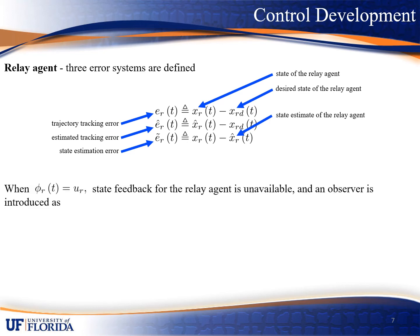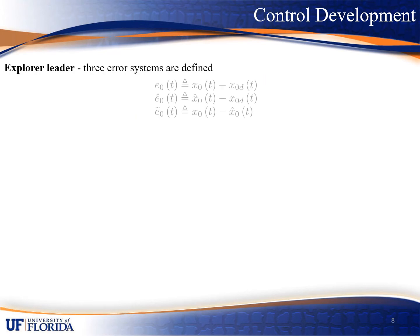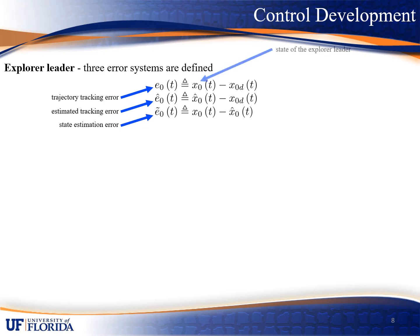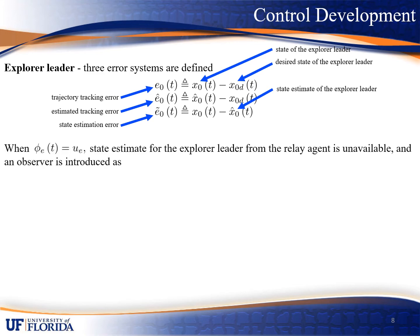When feedback is unavailable, we use an observer to approximate X_R dot. For the explorer leader, we also define three error systems: E_0, E_0 hat, and E_0 tilde, where X_0, X_{0d}, and X_0 hat denote the true state, the desired state, and the state estimate of the explorer leader. Note that E_0 equals E_0 hat plus E_0 tilde, and this relationship will be used in the stability analysis. When feedback is unavailable, we have to use an observer to approximate X_I dot, and we will have to use X_0 hat dot to approximate X_0 dot.